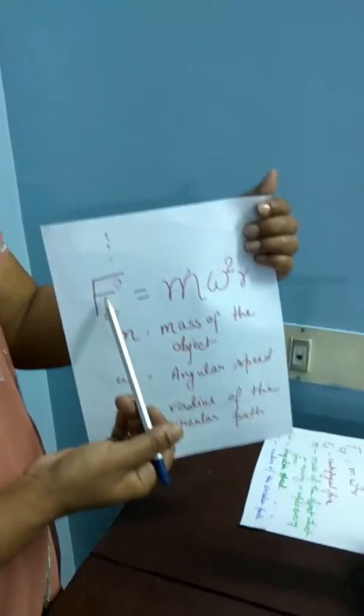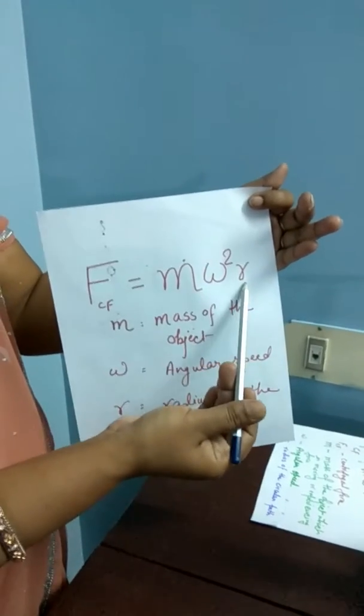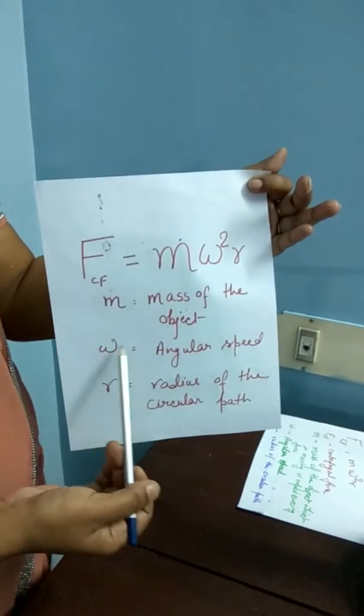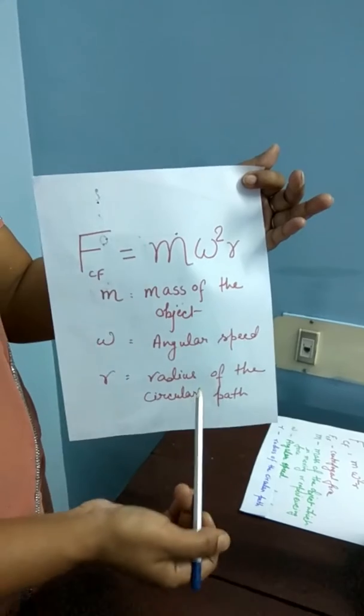This is the formula for the centrifugal force where F_CF is equal to m omega squared r, where m is the mass of the object, omega is the angular speed, and r is the radius of the circular path.